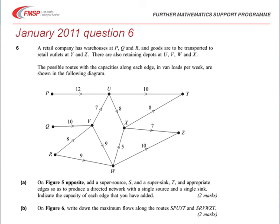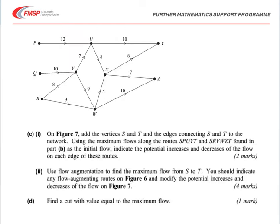Once we've done that, we should then look at the maximum flow along two particular routes, SPUYT and SRVWZT. Basically on the top and the bottom of our new diagram. We're then to use those maximum flows as our initial flow through the whole network and use flow augmentation to find the maximum flow from S to T. Once we've got that maximum flow, then we are to find a cut which has got a value, a cut capacity, equal to that maximum flow.